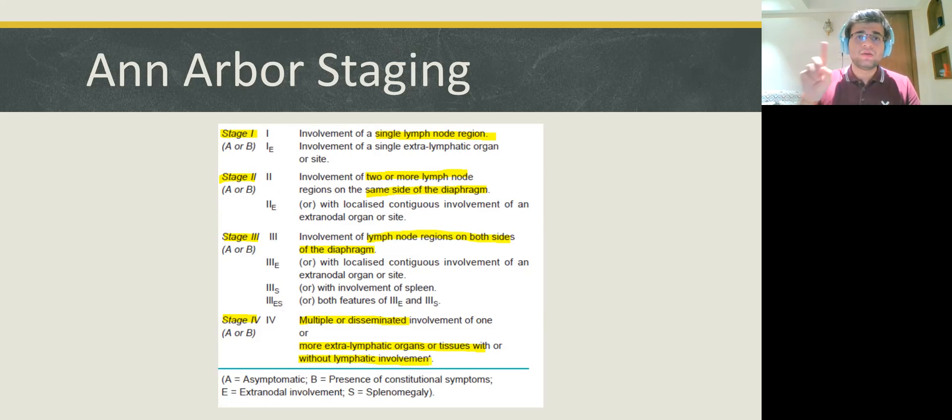A stands for asymptomatic and B stands for the presence of B symptoms. What were the B symptoms? Weight loss, fever and night sweats. These three were the B symptoms. If the patient has these three B symptoms, the patient is staged as B. And if these symptoms are absent, he is asymptomatic, this patient is staged A.